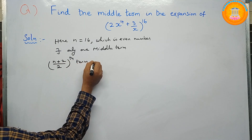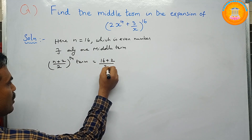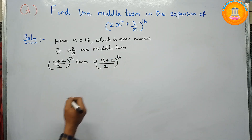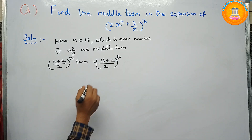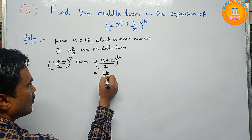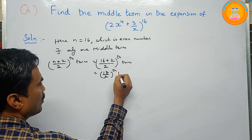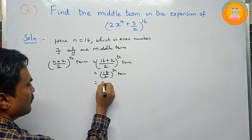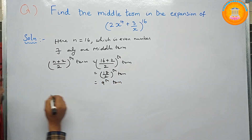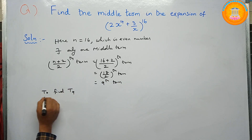Since n equals 16, we compute (16 + 2) / 2 = 18 / 2 = 9. So the middle term is the 9th term, meaning we need to find T9.